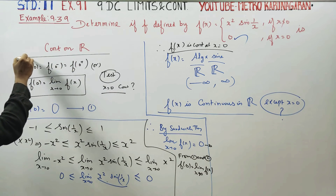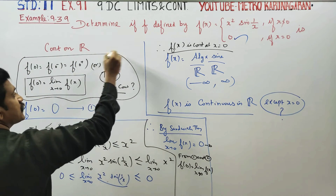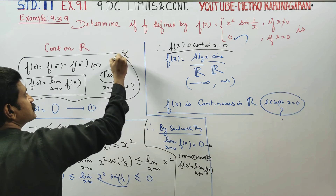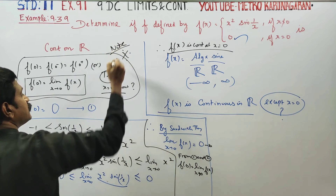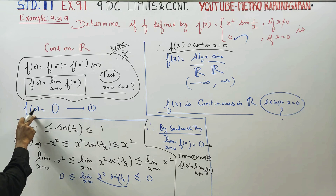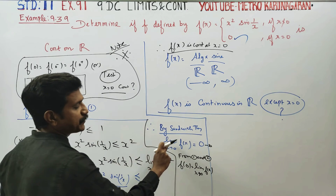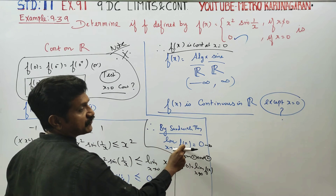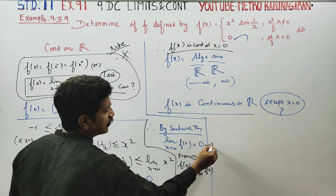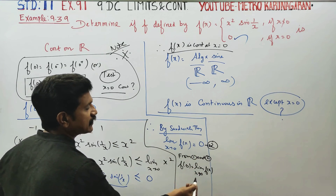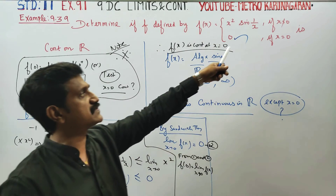In summary for example 9.39: first, find f(0); then use the Sandwich Theorem to find the limit of f(x) as x tends to 0. Since both answers are 0, the results are equal. Therefore, f(x) is continuous at x equal to 0.